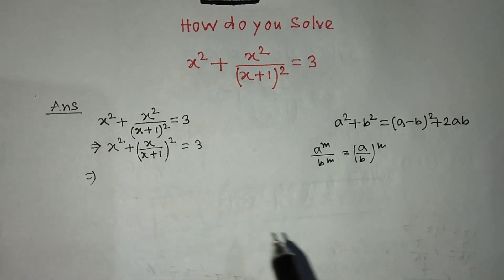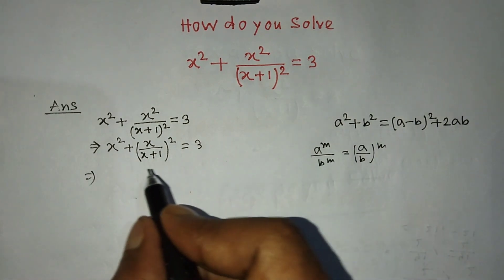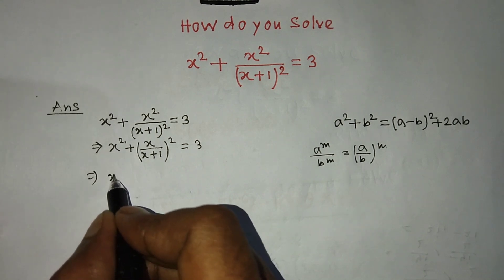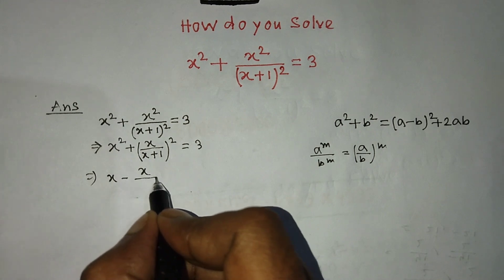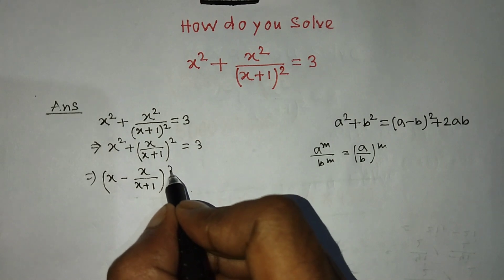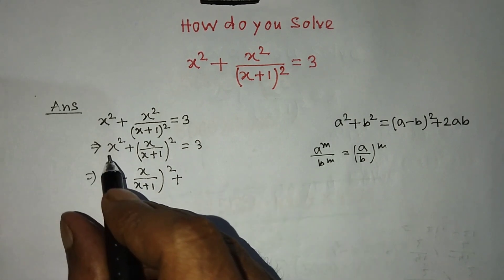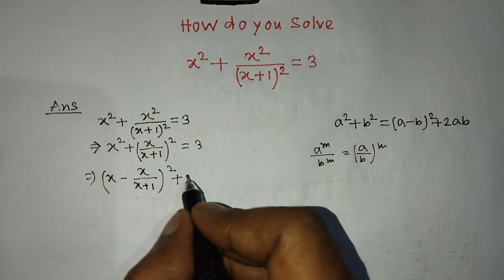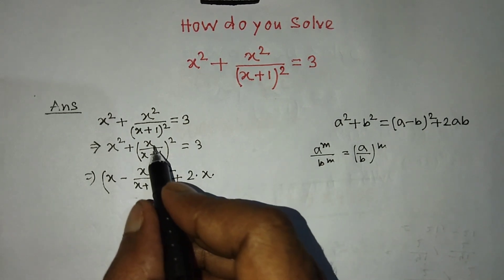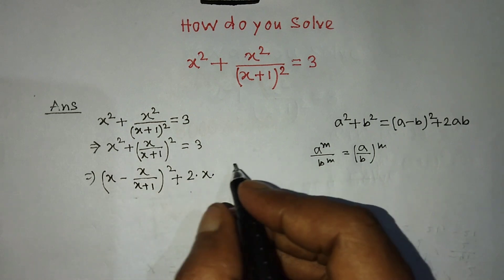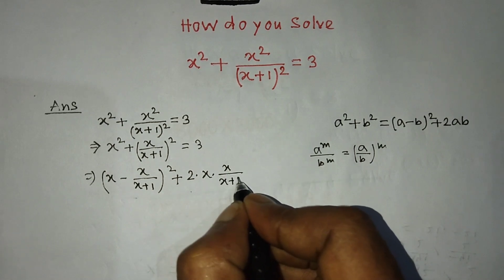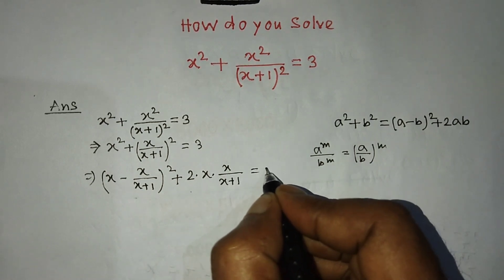We have to apply this formula on the left hand side of this equation. We write x minus x over (x plus 1) whole squared, plus 2 times x times x over (x plus 1), so 2 into x into x over (x plus 1) is equal to 3.